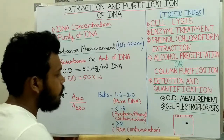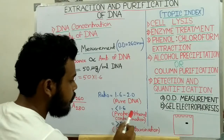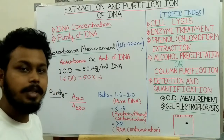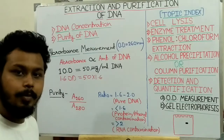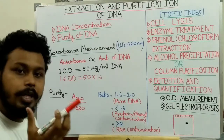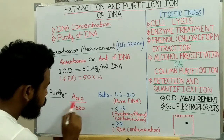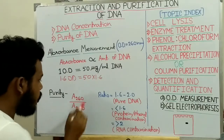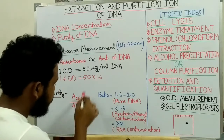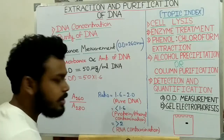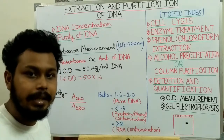If this ratio is less than 1.6, then we can say that protein or phenol contamination is present. That is because proteins show highest absorbance at 280 nanometer, so the overall ratio will be less than 1.6. We can then conclude that protein contamination is present with our purified DNA.